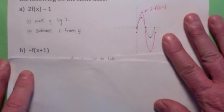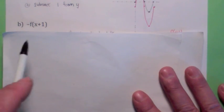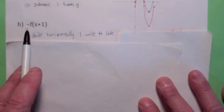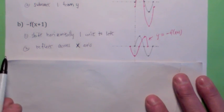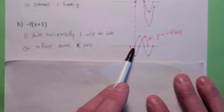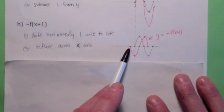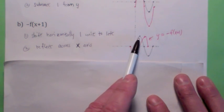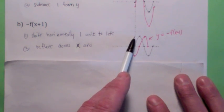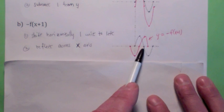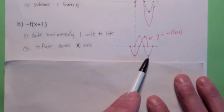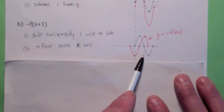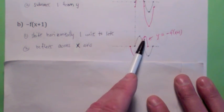Now for this one — −f(x + 1) — here you're going to take f(x), replace x with x plus 1 (that's a horizontal shift 1 to the left), then multiply on the outside by negative 1 (that's a reflection across the x-axis). Let's follow some points. The point (0, 0): move it 1 to the left, then multiply by negative 1, it stays (−1, 0). The point (1, 2): move it 1 to the left, then reflect across the x-axis — it becomes (0, −2). The point (2, 0): move it 1 to the left, then reflect across the x-axis — it stays there. The point (3, −2): move it 1 to the left to get (2, −2), then reflect across the x-axis — it becomes (2, 2).